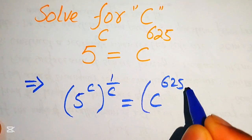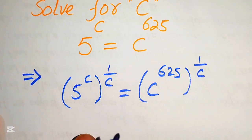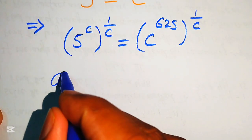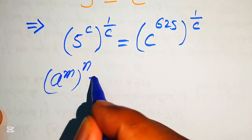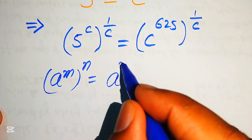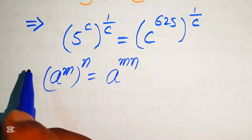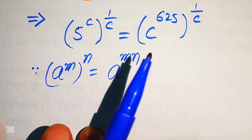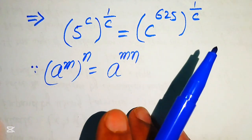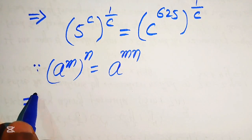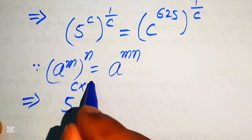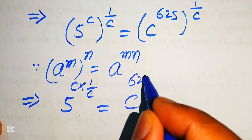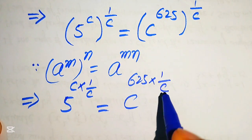After raising both sides to the power of 1 over c, we apply the exponent law: a to the power of m to the power of n equals a to the power of m multiplied by n. So both exponents are multiplied, giving us 5 to the power of c times 1 over c, equals c to the power of 625 times 1 over c.